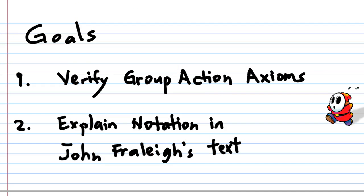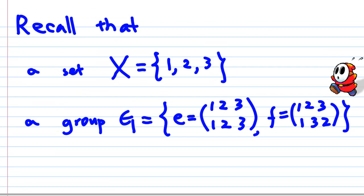The goals of this recording are to show you how to verify a group action, explain the notation used in John Fraleigh's text. Recall that in our earlier recording, we gave a set X consisting of {1, 2, 3} and a group G consisting of E, which is the identity, mapping 1 to 1, 2 to 2, 3 to 3.